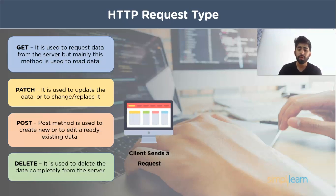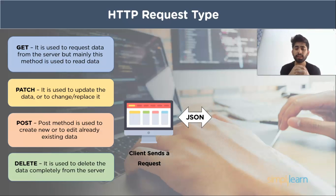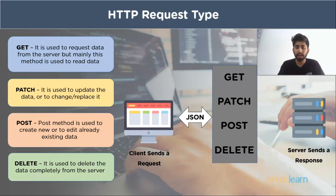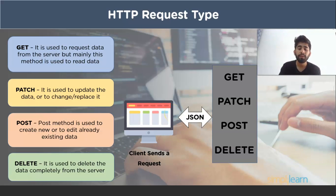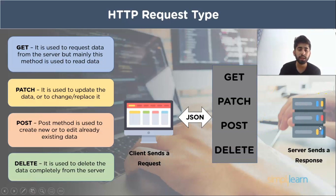Now we will see the complete architecture of HTTP request types. The client sends a request in the form of a JSON file, and with the help of HTTP requests — which are GET, POST, DELETE, and PATCH — it will go to the server. Then the server sends back the response to the client in the form of a message to tell what happened to your request.